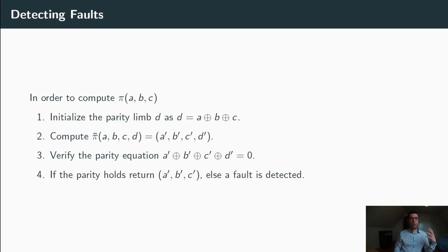Now in order to compute pi of ABC, we will proceed the following way. First, we will initialize the parity limb D as D equals A XOR B XOR C. Then we will compute pi bar of ABCD. And finally, we will verify whether the output A' B' C' D' verifies the parity equation or not.